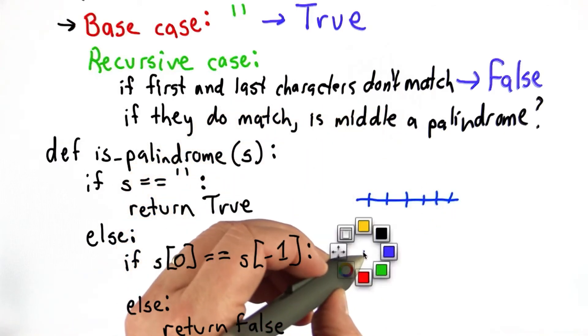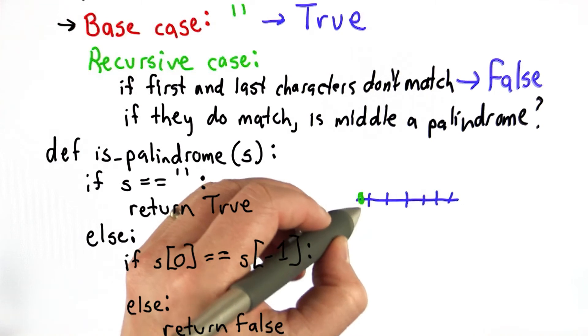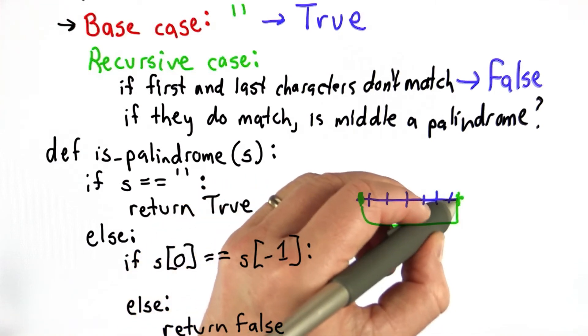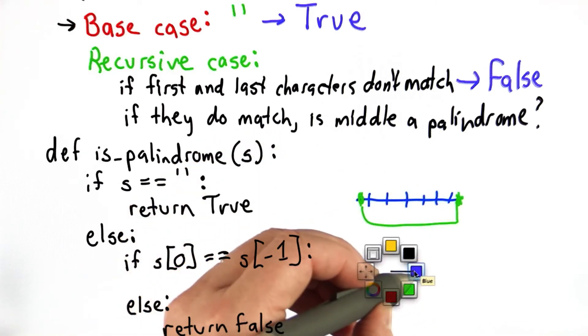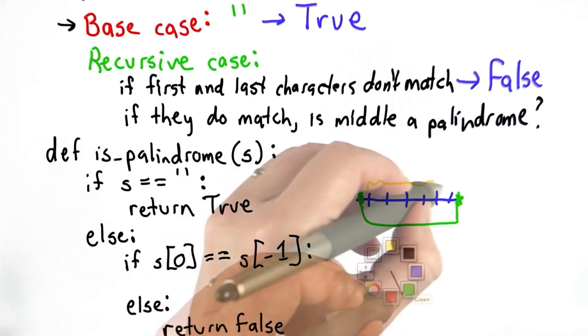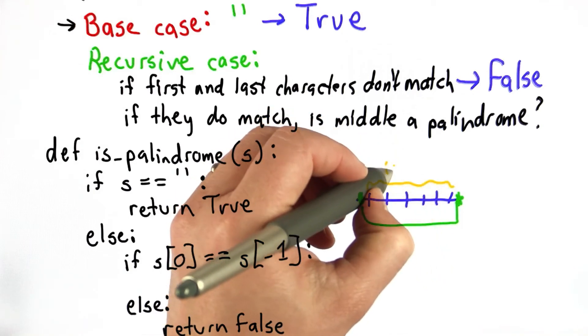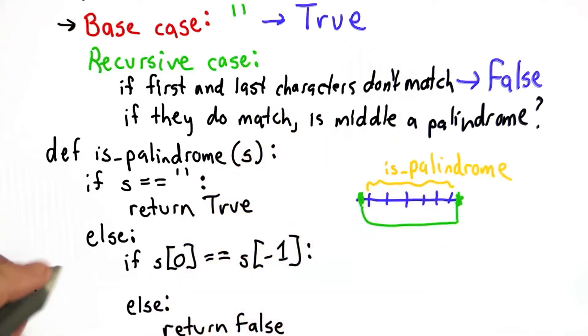It had all these characters in it. We checked that this one matches this one. So now what we need to do is take the rest of the string and check if this is a palindrome. That'll be our recursive call.